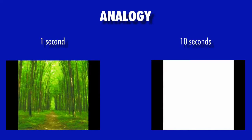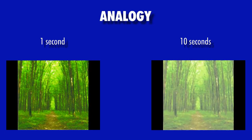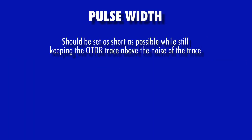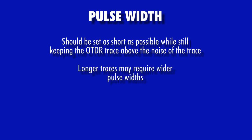Consider this helpful analogy: if someone shines a flashlight in our eye for one second, our eye will be blinded for a second before it can begin to recover enough to see detail. We can then conclude that if the flashlight is on for 10 seconds, our eye cannot begin recovery until after 10 seconds has passed. For best results, the pulse width setting should be as short as possible while still keeping the end of the OTDR trace sufficiently above the noise level to prevent false events. Obviously, longer fibers may require longer pulse widths.